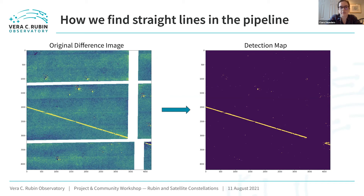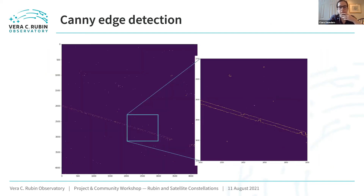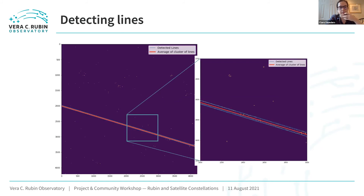This is an example of one of these difference images — one where there's really obviously a satellite streak going through. What we've done here is first take the detection map: basically anything that is above a certain threshold for signal-to-noise. Then we run the Canny edge detection on our detection map, and what you can see is that the streak has now become two approximately straight lines. This is where we run the Hough transform.